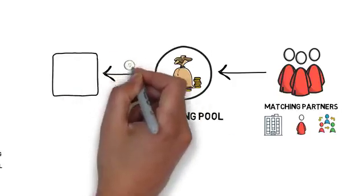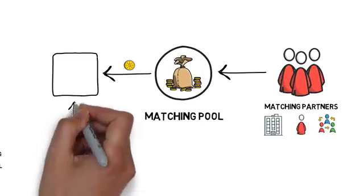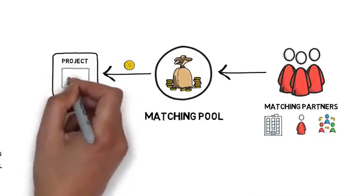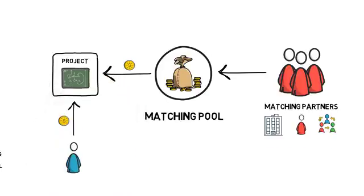The funds collected in the matching pool are used to magnify the individual contributions to different projects. To understand the concept of quadratic funding better, let's go through a quick example.